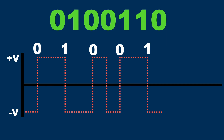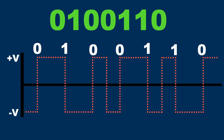The next bit is also a one, so now the voltage jumps to the positive voltage level for the start of the bit and stays there for half the bit time, and then changes to the negative voltage level. The next bit is a zero, so the voltage stays at the negative voltage level for half the bit time and then changes to the positive voltage level, and so on and on.